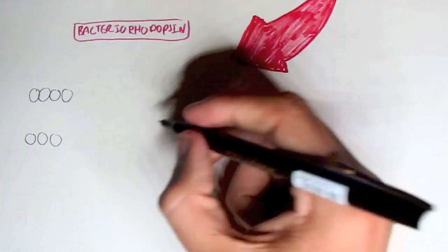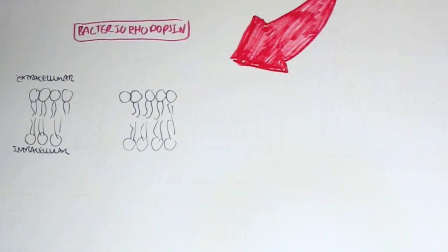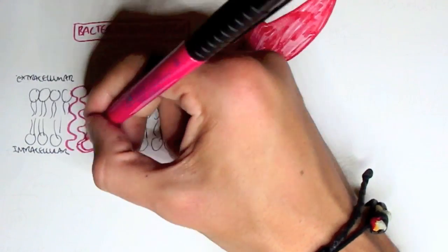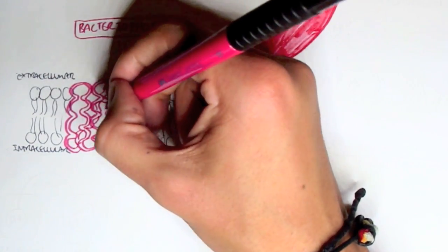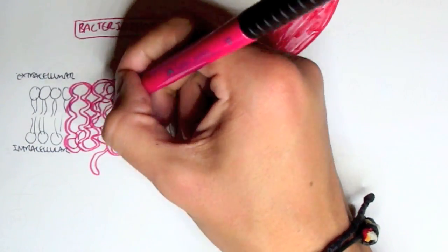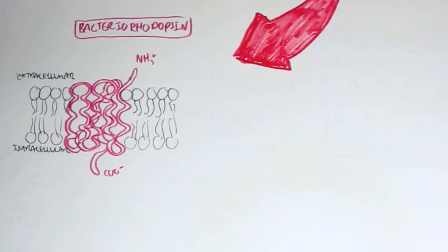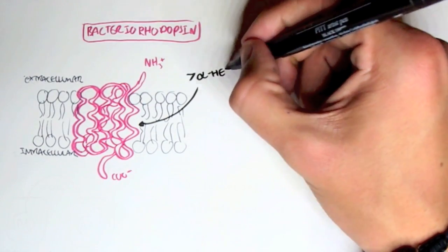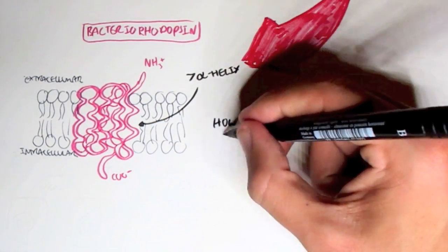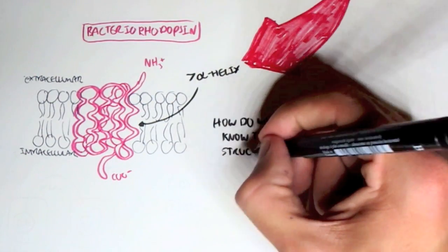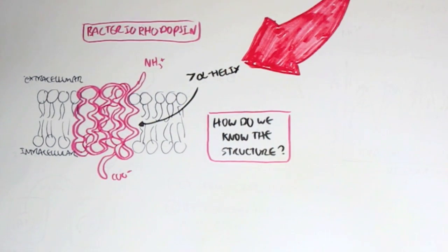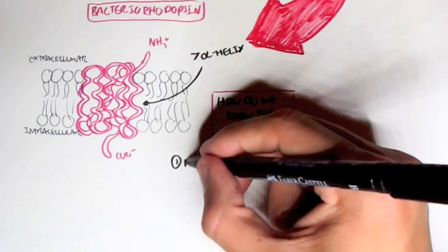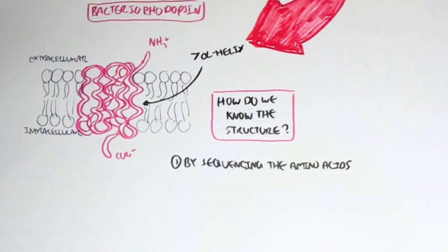Now let's look at bacteriorhodopsin, which is a membrane-spanning alpha helix protein. It consists of a single polypeptide chain that folds into 7 hydrophobic alpha helixes. The amino group is in the extracellular fluid and the carboxyl group is in the intracellular fluid. So how do we know what bacteriorhodopsin actually looks like — how do we know its structure?